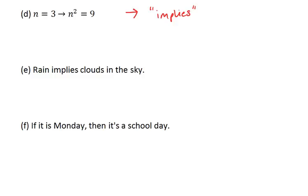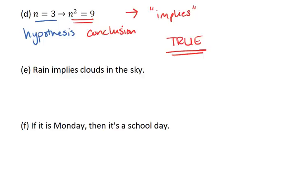Looking at that, n equals 3 is our hypothesis, and n squared equals 9 is our conclusion. To determine if this conditional statement is true or false, we assume the hypothesis is true, that n equals 3. Does this mean that n squared must equal 9? Since it does, our statement is true.